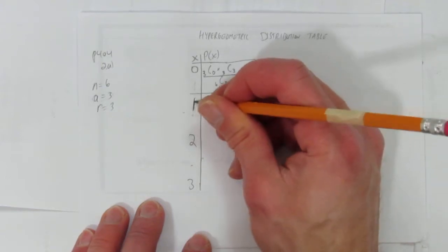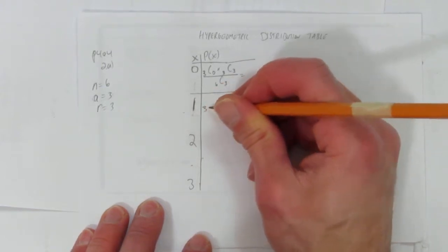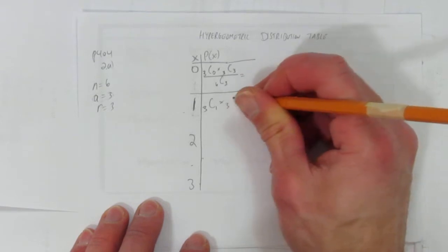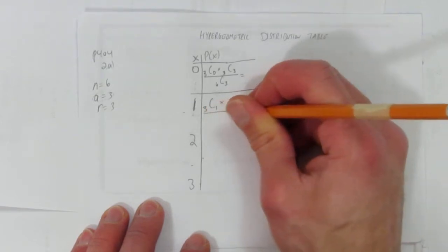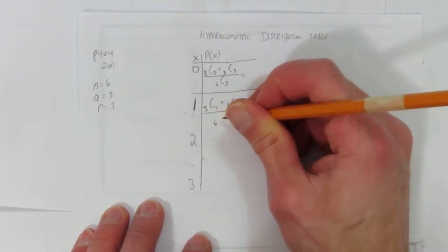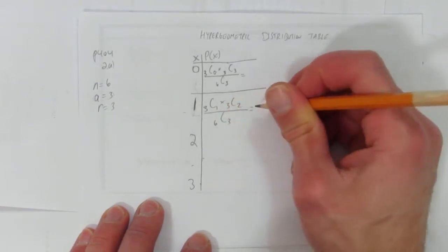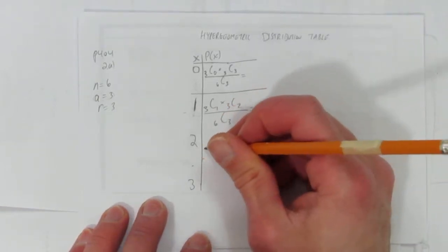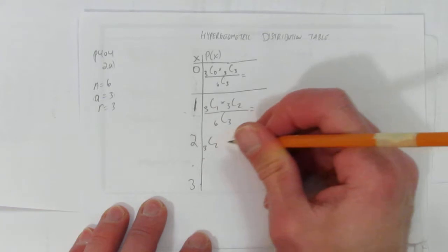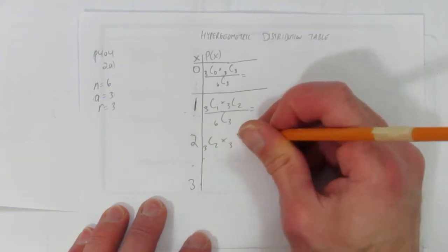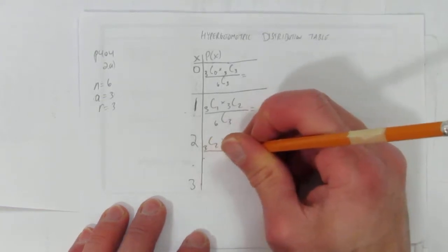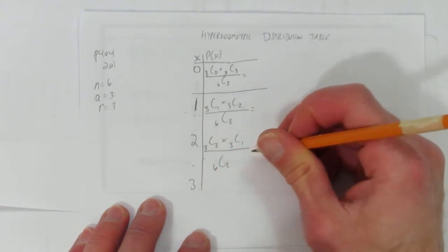How about 1 of the things we want? That means of the 3 things we want choose 1, of the 3 things we don't want choose 2, out of the total 6 things we have to choose 3. How about 2? That's 3 choose 2 of what we want times 3 choose 1 of what we don't want out of 6 choose 3 total.